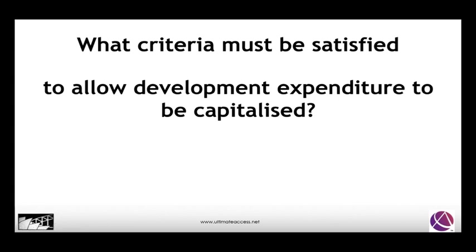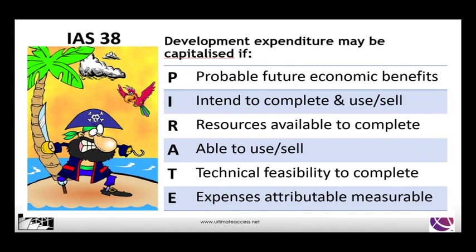So what are the criteria? PIRATE is a good way to remember them. They need to demonstrate probable future economic benefits. We must intend to complete and use or complete and sell whatever we are developing. We must have the resources available to complete and be able to use or sell what we are developing. The technology must exist to enable us to complete, and those expenses incurred must be identifiable separately and measurable. P-I-R-A-T-E: PIRATE.